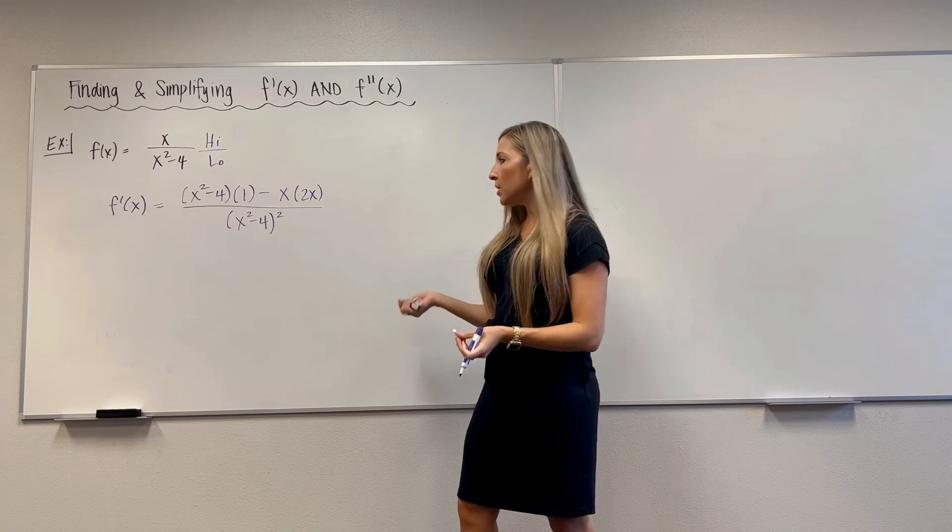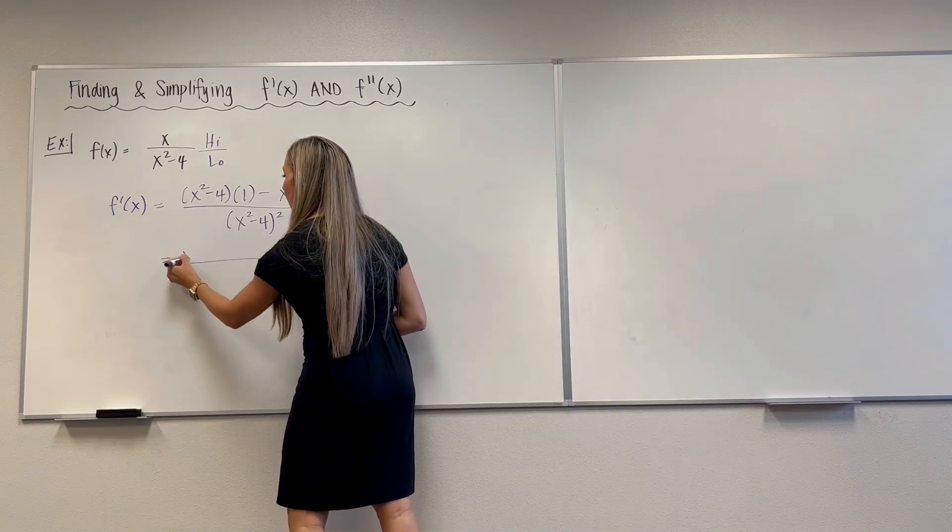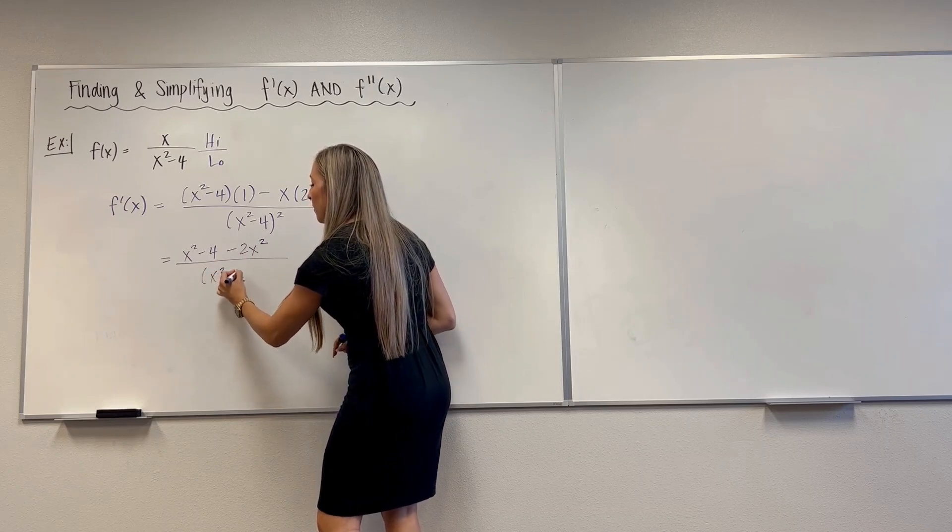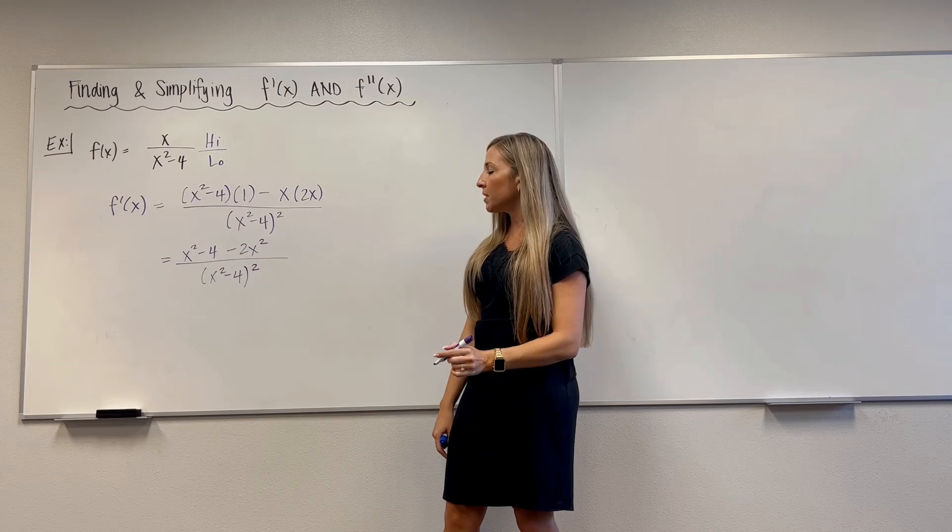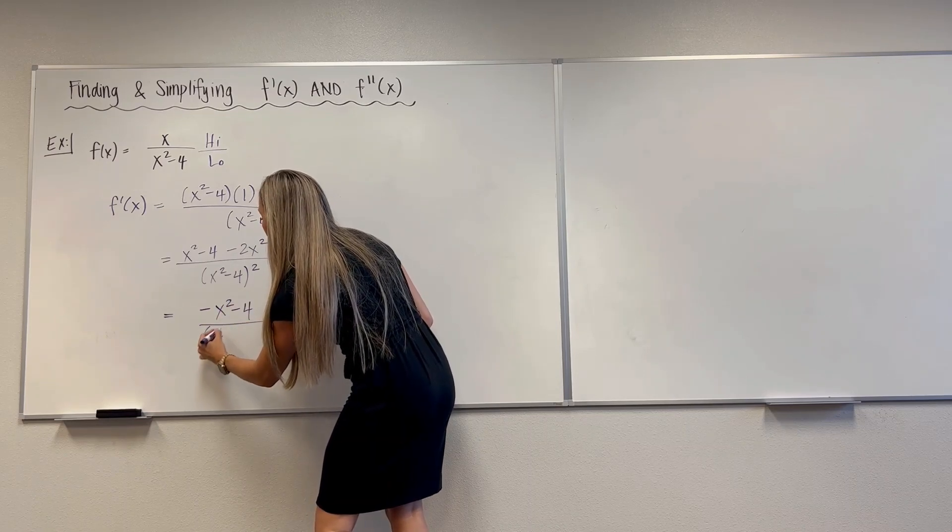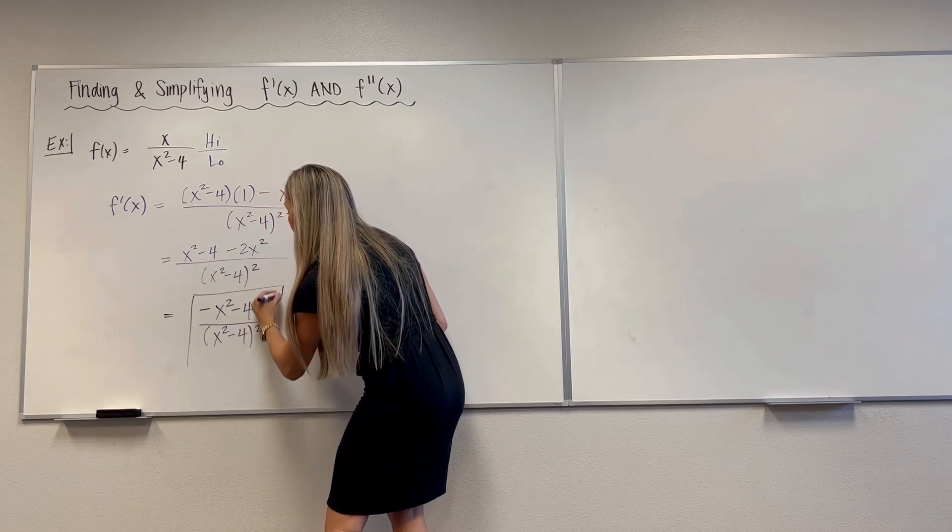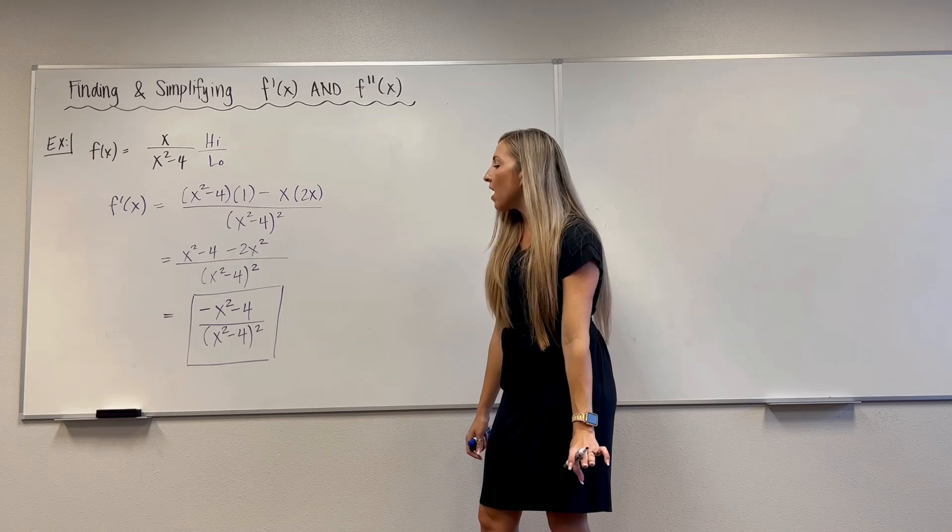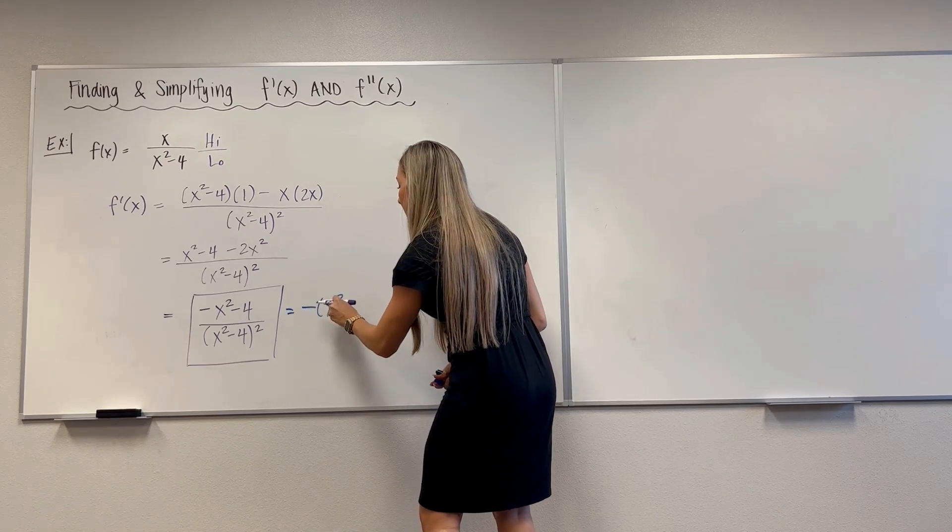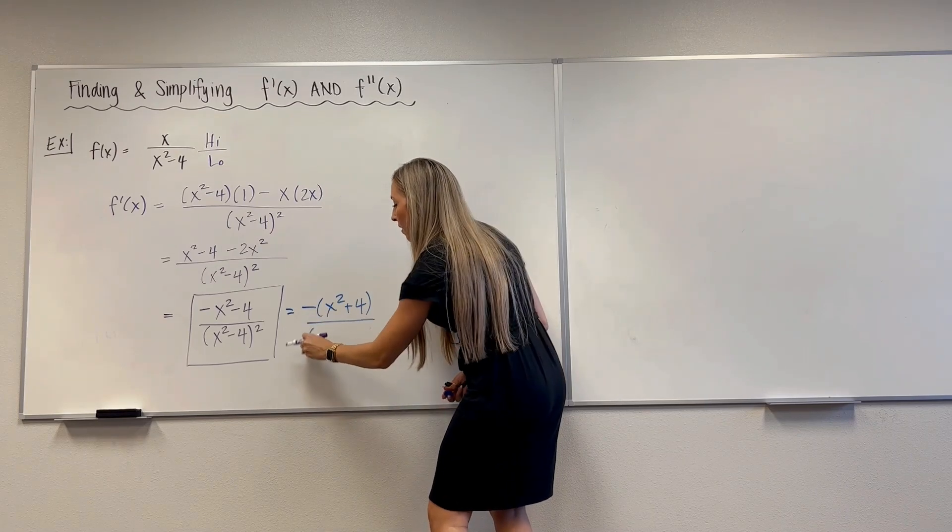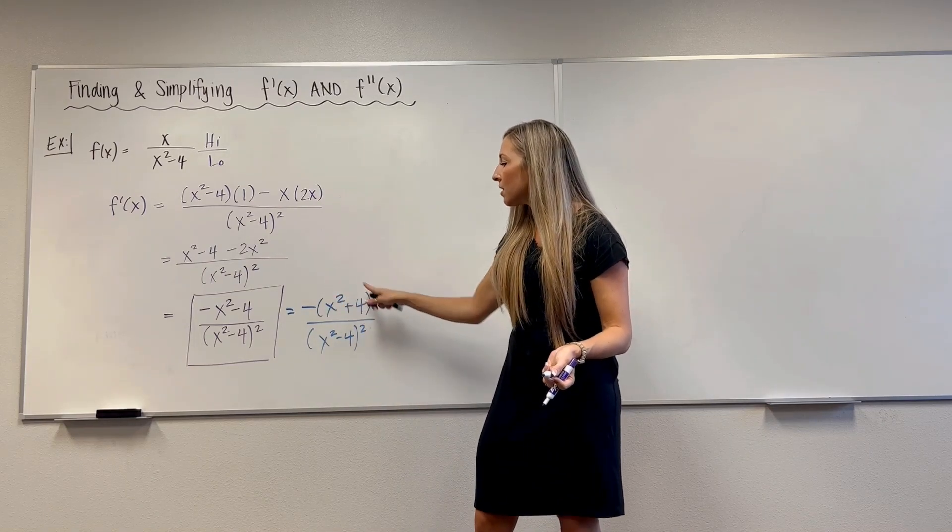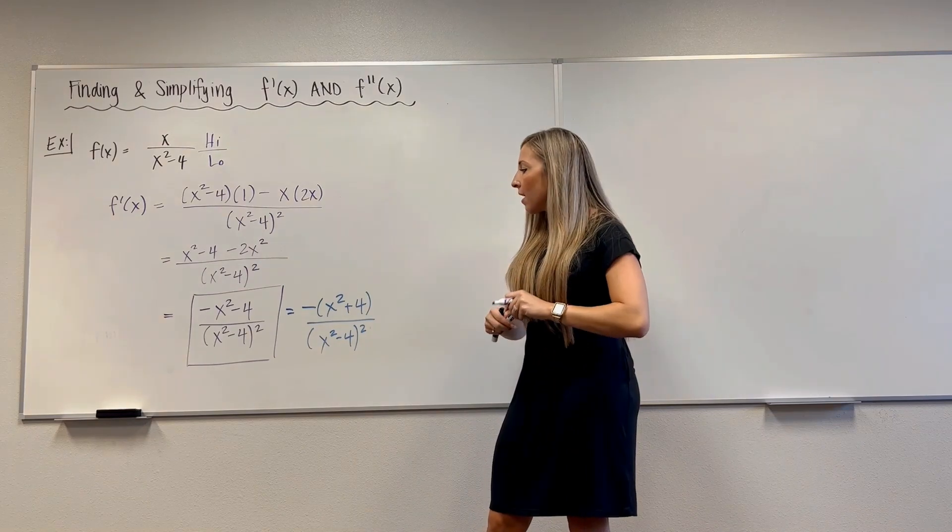Now this one's not going to be too bad to clean up. So we've got x squared minus 4. This is minus 2x squared over x squared minus 4 squared. And then I can combine like terms in the numerator there. So we've got negative x squared minus 4 over x squared minus 4 squared. That's f prime of x. That's not bad. Most students can do that just fine.